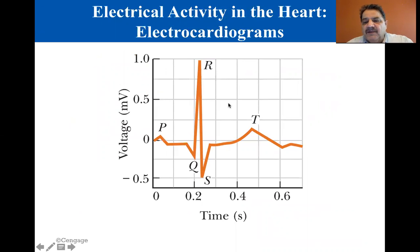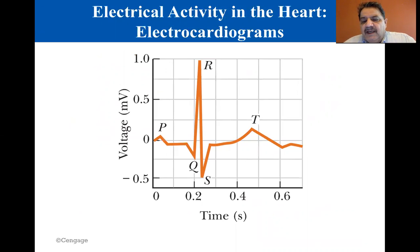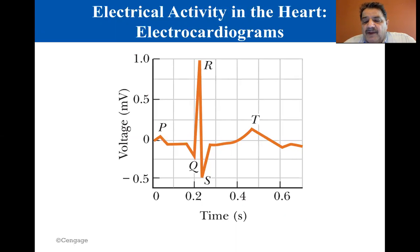A sketch of the electrical activity registered on an EKG for one beat of a normal heart is shown in the figure. The pulse indicated by P occurs just before the atria begin to contract. The QRS pulse occurs in the ventricles just before they contract, and the T pulse occurs when the cells in the ventricles begin to recover.